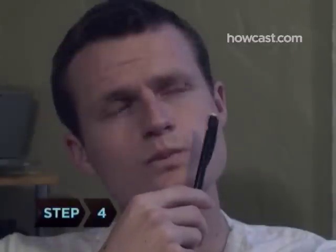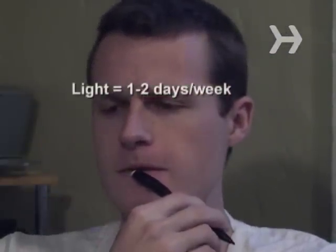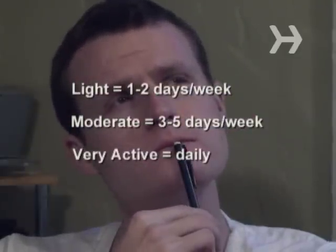Step 4. Determine your daily activity level. Sedentary people get little to no activity. Light levels include activity a few days a week, moderate includes activity three to five days a week, and very active individuals play sports daily.